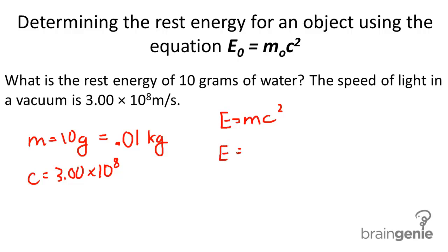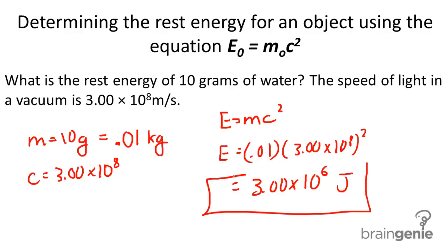We get E equals 0.01 times 3.00 times 10 to the 8th squared. And therefore, we get a value of 3.00 times 10 to the 6th joules as the rest energy for 10 grams of water.